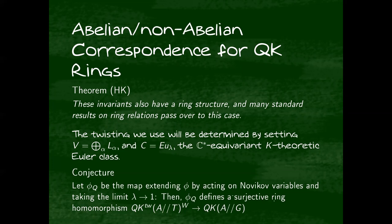The conjecture here is that once we make this twisting, then the natural extension of the abelian non-abelian correspondence is supposed to hold for quantum K-rings. It means we can extend this map to curved classes in some natural way. Then once you do that and take the limit lambda goes to 1, we get a surjective ring homomorphism from the Weyl invariants of the twisted quantum K-ring of A mod T to the quantum K-ring of A mod G.